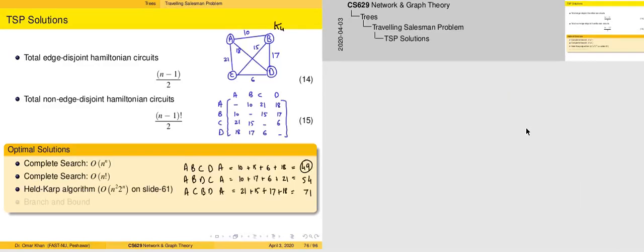The basic principle here is that we have to construct a search space starting from null and make our way gradually across sets of increasing cities. We can start with either A, B, C, or D. Once we start at a tour of length 1, we gradually go to a tour of length 2 representing AB, AC, AD and so on, then to a tour of length 3, and finally to a tour of length 4.